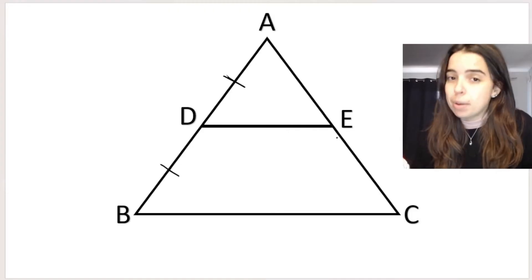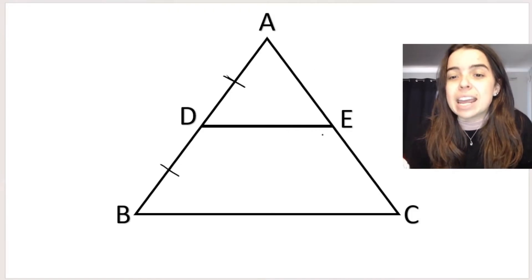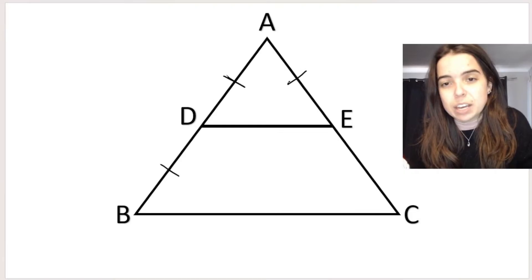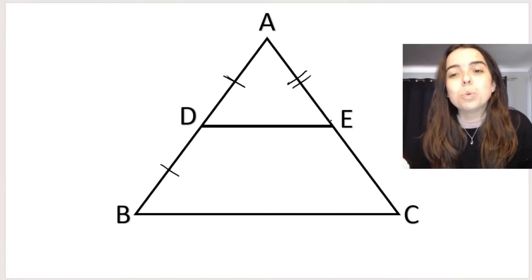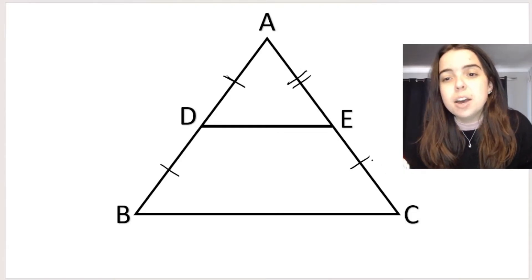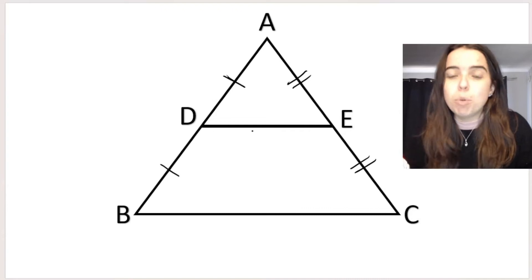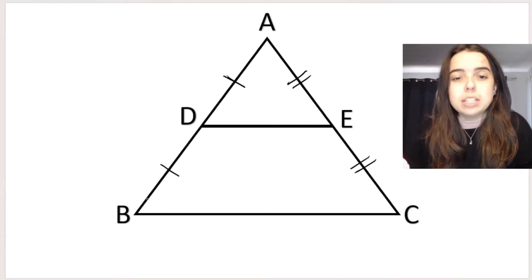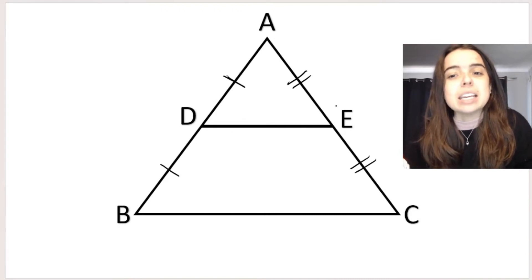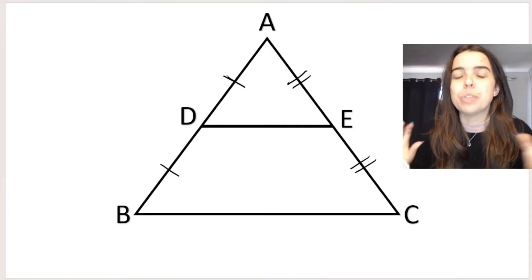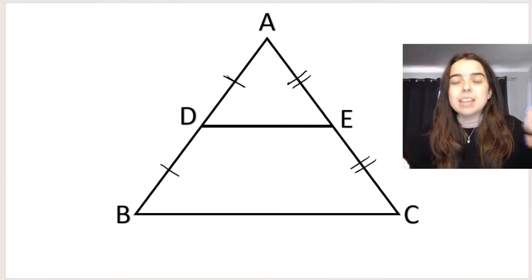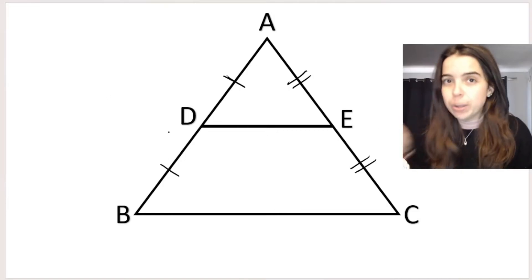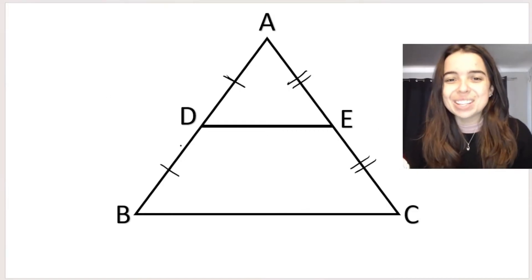E was the midpoint of line AC, which means that this length over here, AE, is equal to the length over here, EC, because that's what midpoint means. It means in the middle, which makes AD equal to DB and AE equal to EC. Now if you do that, what happens as a result are the following two really cool things.